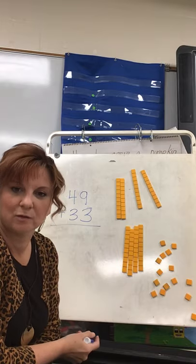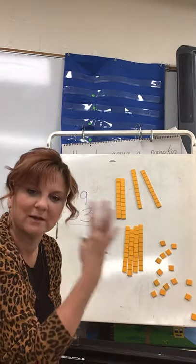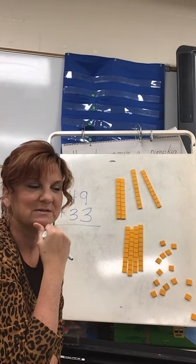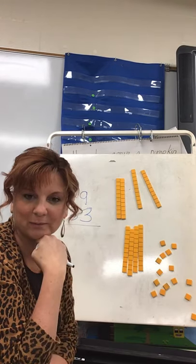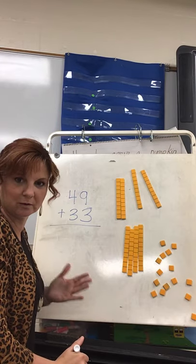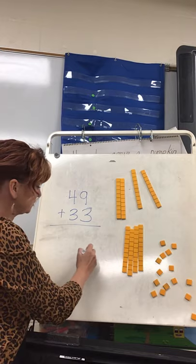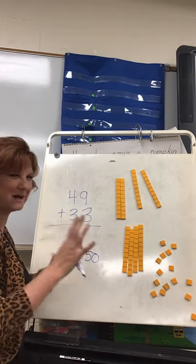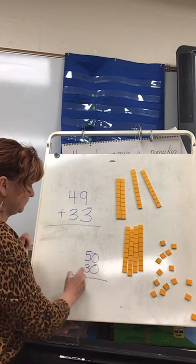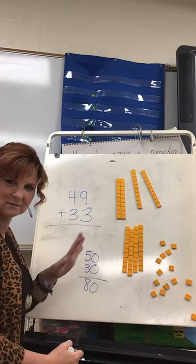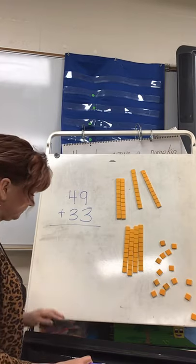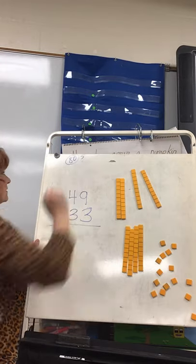We want to add 49 plus 33. I'm going to model it in my mind first to get an estimate of where the answer should be close to. This is what we do mentally when we're at the store without paper and pencil. 49 is super close to 50, and 33 is kind of close to 30, so the answer should be close to 80. Let's put 80 up there.